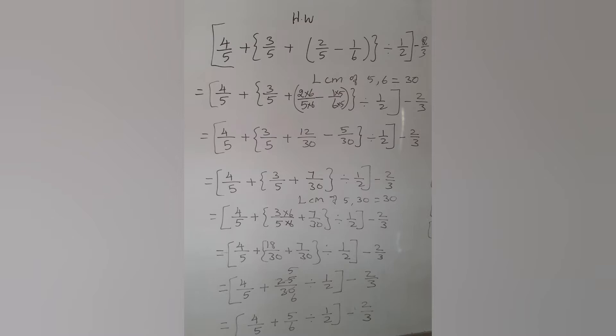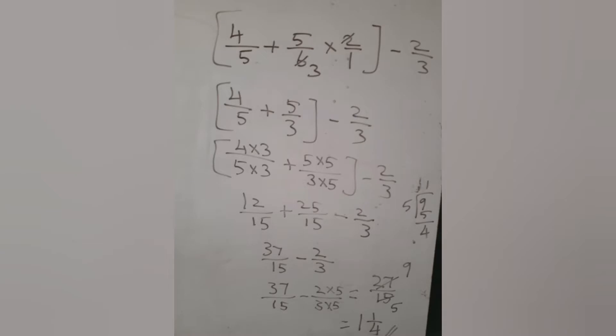Now we can remove the curly bracket. LCM of 5 and 30 is equal to 30. Now we can multiply by 6. 3/5 multiply by 6, so 18/30 plus 7/30 equals 25/30. That is, using the 5 table, we cut it: 5 into 5 is 25, 5 into 6 is 30. Then we can remove the square bracket. There is addition and division. First preference for division.